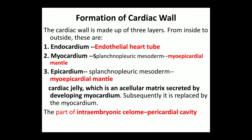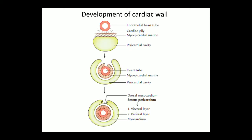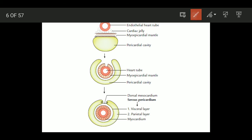The pericardial cavity is a part of the intraembryonic coelom. Here we can see the endothelial heart tube and cardiac jelly, which is secreted by the developing myocardium and the myoepicardial mantle. This myoepicardial mantle will form the myocardium and epicardium, and the endothelial heart tube will form the endocardium of the heart.